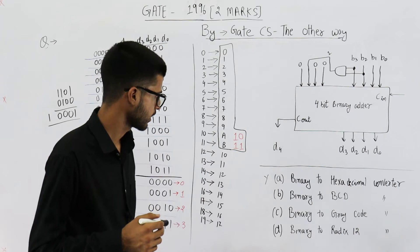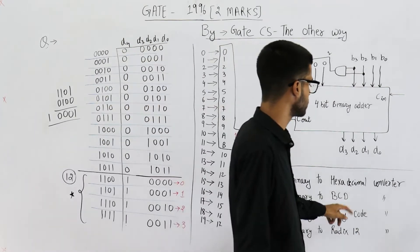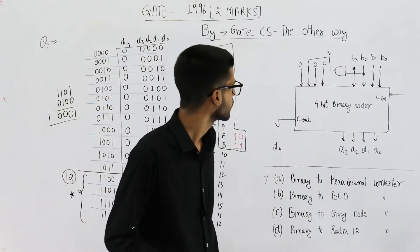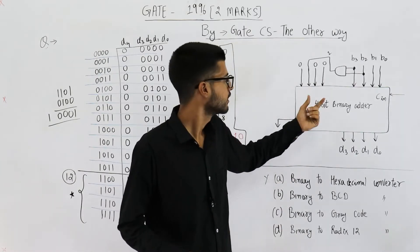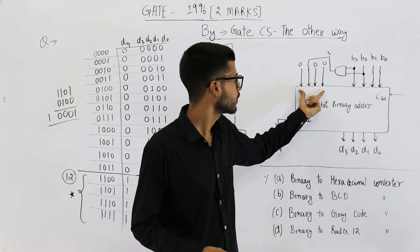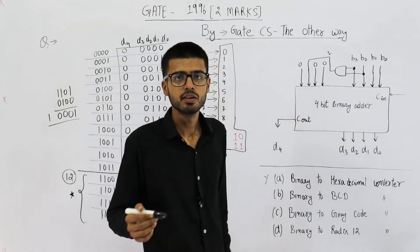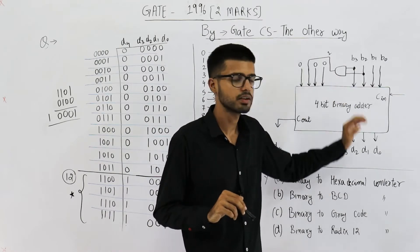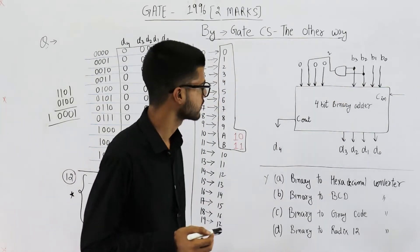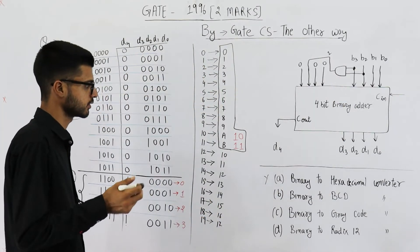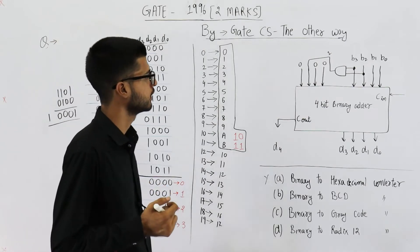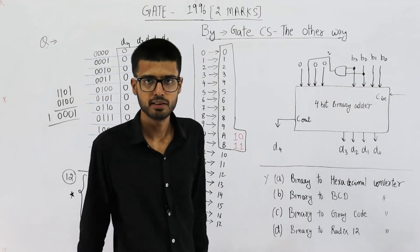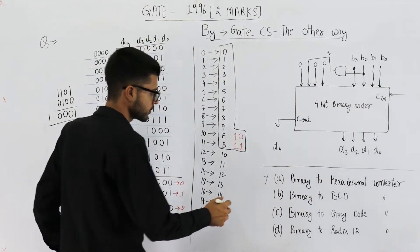Let's analyze the next option. Binary to BCD. No, it's not a binary to BCD converter. Because in a binary to BCD converter, we add 6. 0110 is added only when number is greater than equal to 10. So that's a bit different circuit. I'll display its image. Anyways, you can just have a look in my theory lectures. The point is we are adding 4 here. So it cannot be a binary to BCD converter. Option B is also rejected.